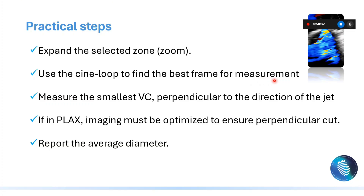Use the cine loop to find the best frame for measurement, which is the largest frame — meaning the largest jet. Then measure the smallest vena contracta in this largest frame. Take care: you are searching for the largest frame in order to measure the narrowest part within that frame.